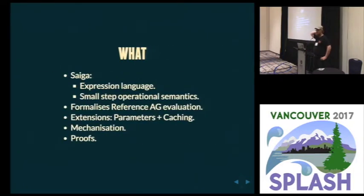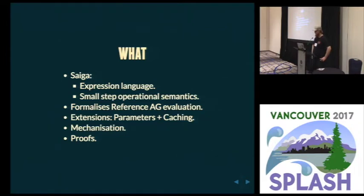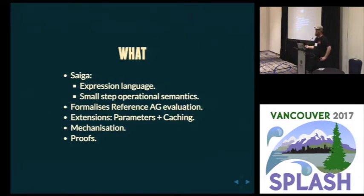So what we did was create what we call SAIGA, which is an expression language and a small step operational semantics for dynamically scheduled attribute grammars. We formalized this in Greek, as you'll see. We wrote some extensions — not all of the features we were talking about before, but some of them. We mechanized all of this in Coq and proved some properties about our system, about how the extensions relate to each other, and some properties about programs written in these attribute grammars.